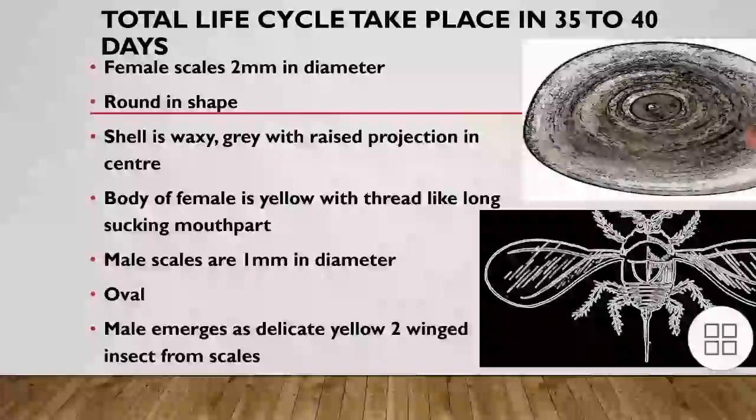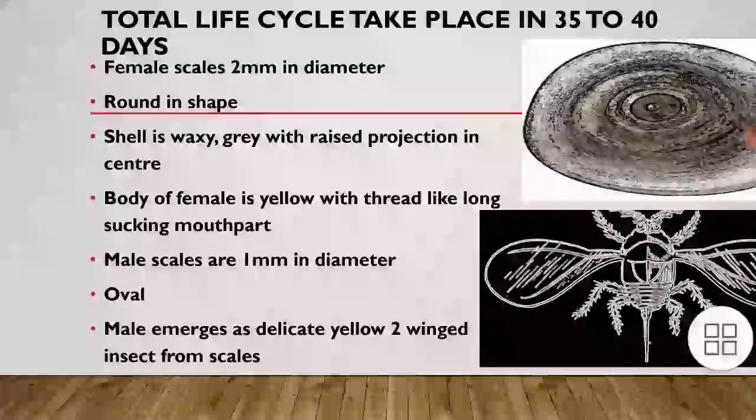Female scales measure 2 mm in diameter. They are round in shape. The scale is waxy gray with a raised projection in the center. The body of the female is yellow with a long sucking mouthpart. Male scales are 1 mm in diameter, oval in shape, and the male emerges as a delicate yellow two-winged insect from the scale.